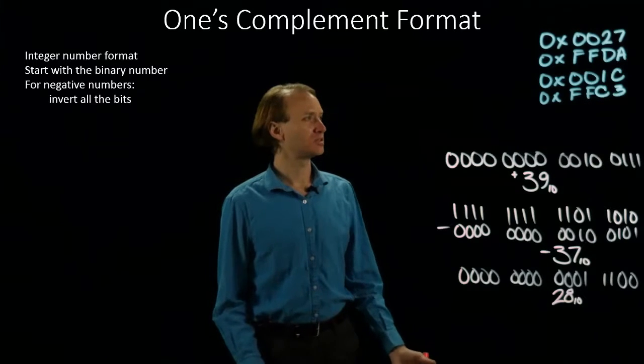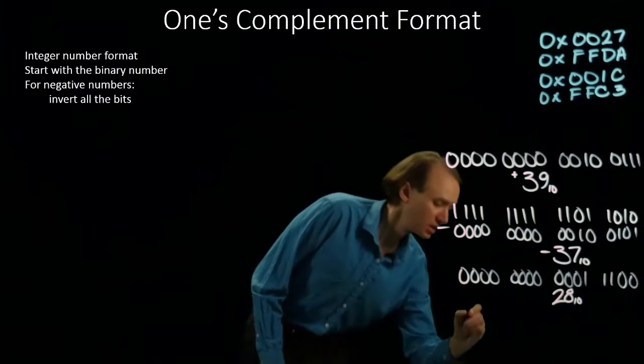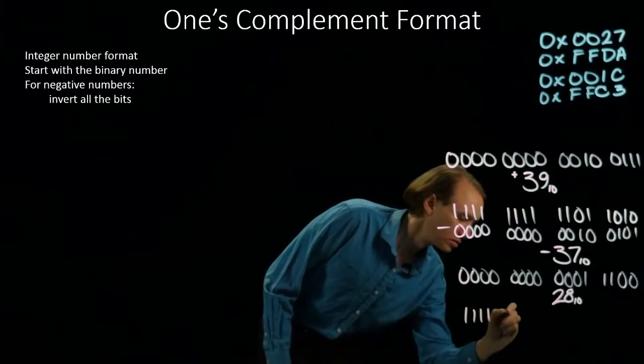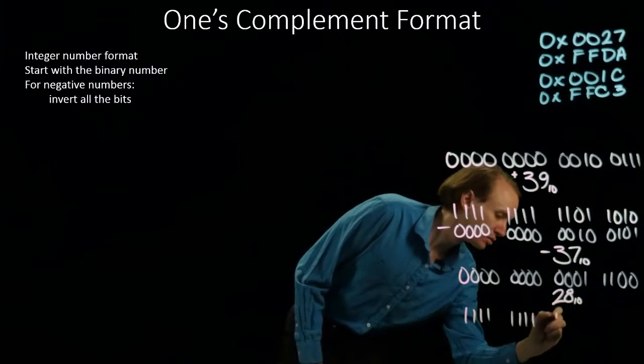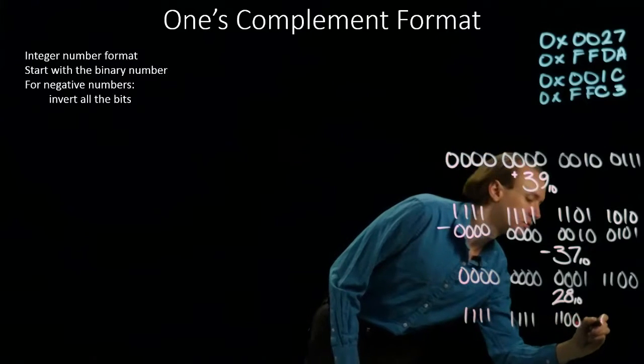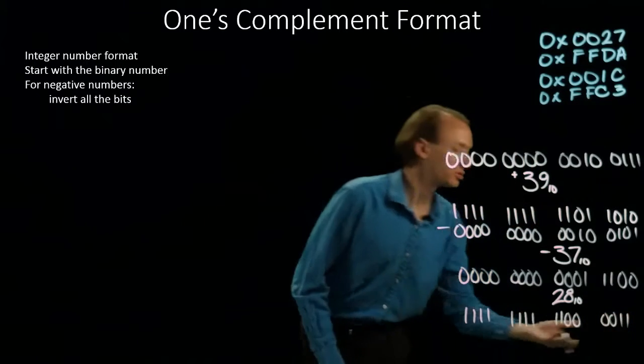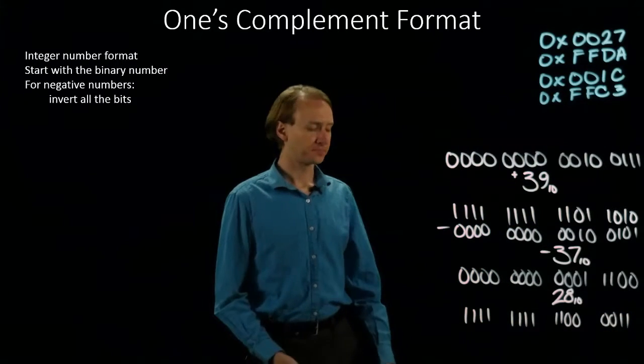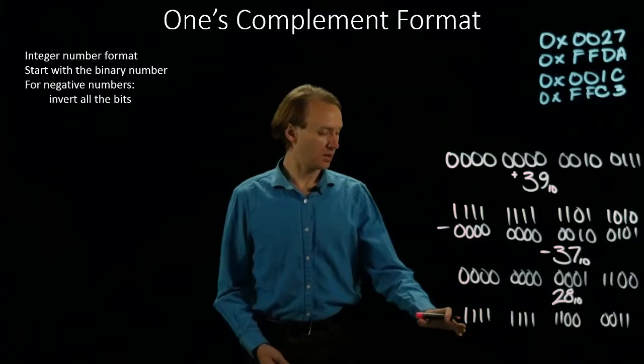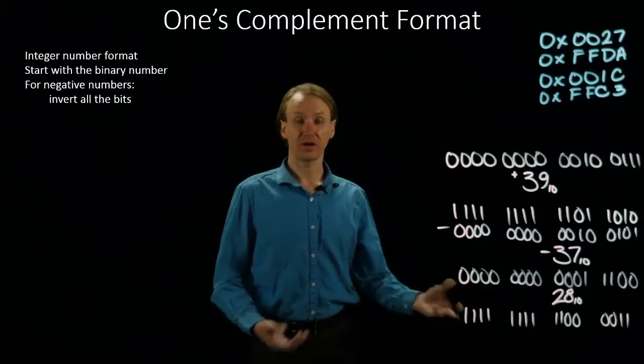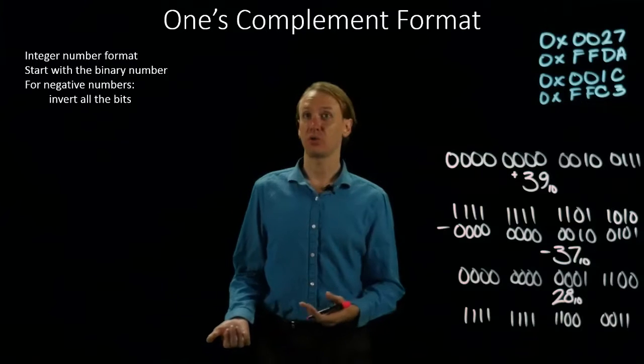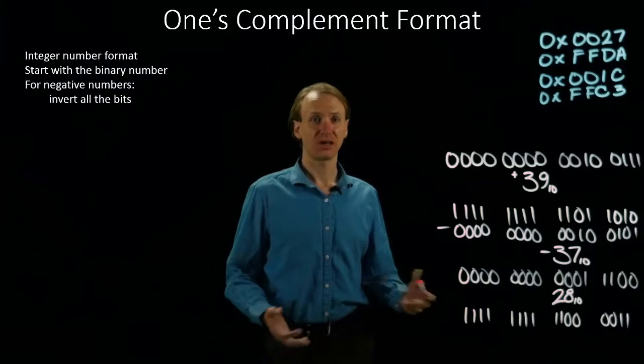Our last example is FFC3, which looks like this in binary. And because the leading bit is a 1, I've got a negative number. I'll need to apply the one's complement operation so that I get something I can read.